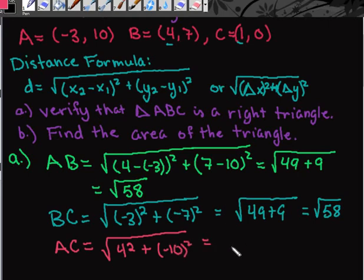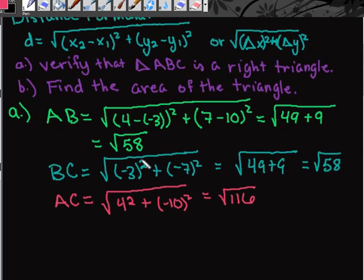So I end up with a total of 116. After finding the distances, you would make sure that all of these are simplified. This is an exact answer. An approximate answer would be plugging it into your calculator. 58 cannot be simplified. For right now, we're just going to leave it like this.